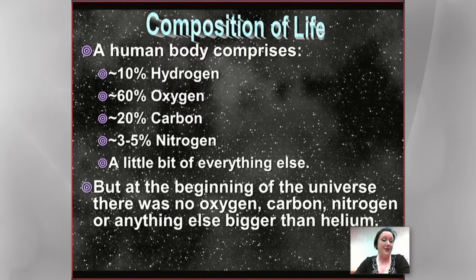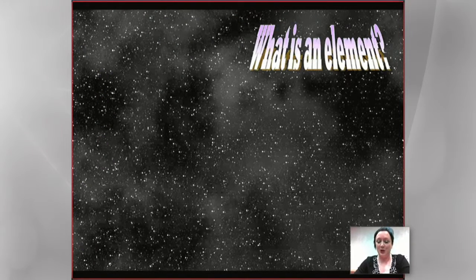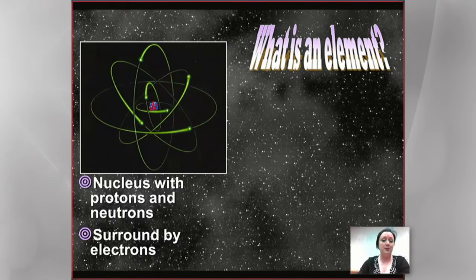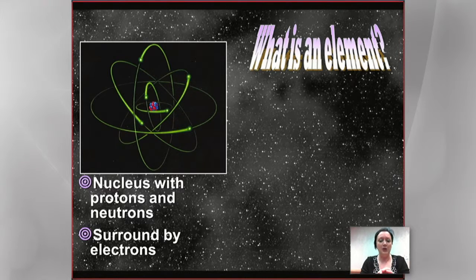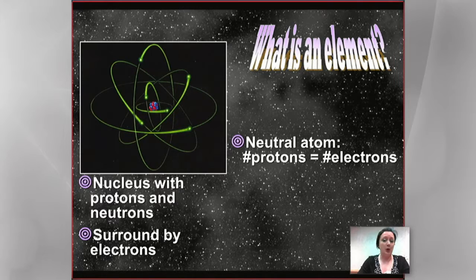We don't have that stuff at the beginning of the universe, so we have to know where it was made. So where do those elements come from? Let's talk about what an element is, just to make sure everybody understands this. When we have an element, we're talking about atoms. Atoms are these tiny little things that have a core that is minuscule, made of protons and neutrons, and then it has electrons around it. In terms of what makes something a specific element, it's actually to do with the number of protons.